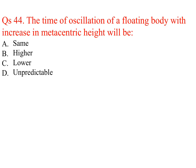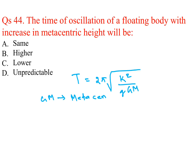The time of oscillation of a floating body: T = 2π × √(k² / (g × GM)), where GM is the metacentric height. With an increase in metacentric height, the time of oscillation of a floating body will be lower.